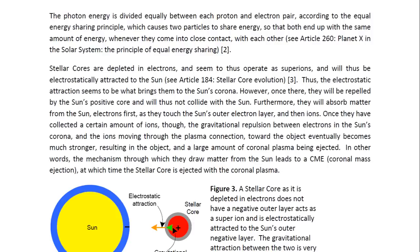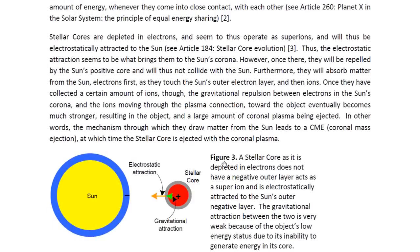Furthermore, they will absorb matter from the sun's electrons first as they touch the sun's outer electron layer and then ions. Once they have collected a certain amount of ions, the gravitational repulsion between electrons in the sun's corona and the ions moving through the plasma connection toward the object eventually becomes much stronger resulting in the object and a large amount of coronal plasma being ejected. In other words, the mechanism through which they draw matter from the sun leads to a CME or coronal mass ejection, at which time the stellar core is ejected with the coronal plasma.